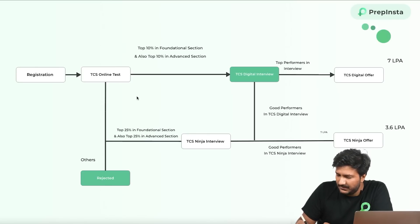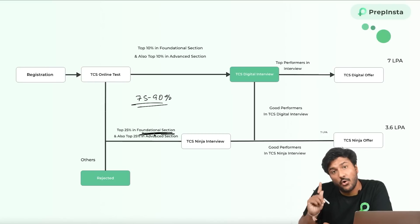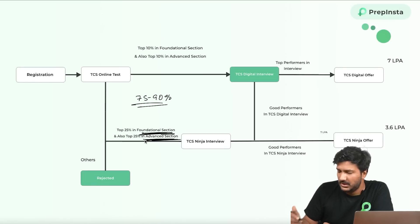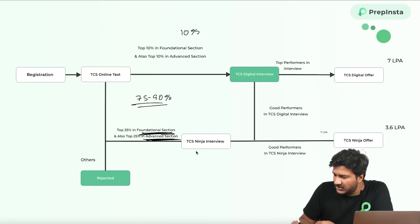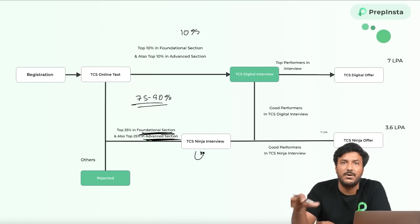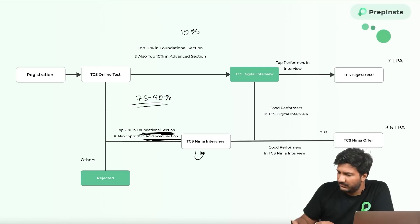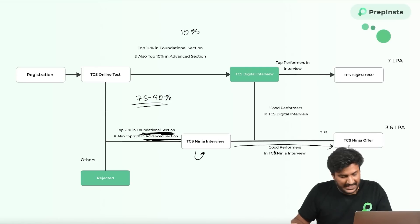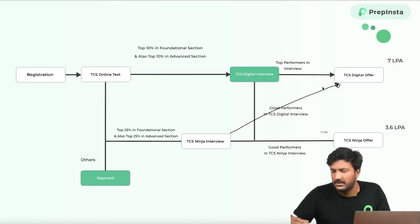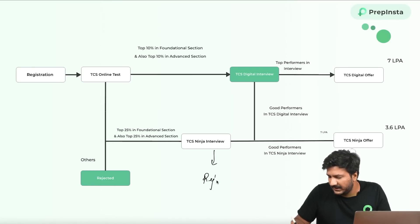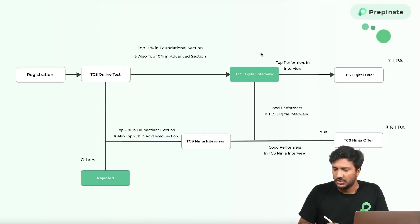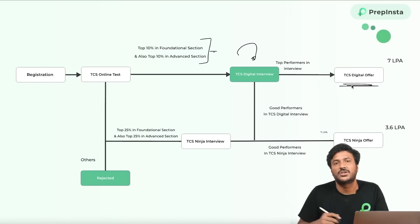However, if you are not in the top 10% but are in the top 25% — that is, between the 75th and 90th percentile in both the Foundational and Advanced sections — your interview will still happen, but regardless of how well you perform, there will only be one or two outcomes: you get the Ninja offer, or you get rejected. You will not get the Digital offer from this position. Only being in the top 10% gives your interview a chance to earn you the Digital offer.